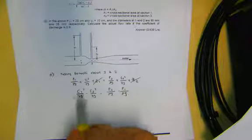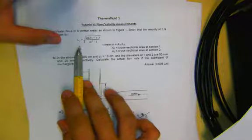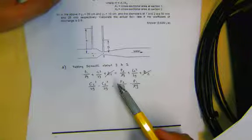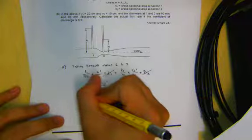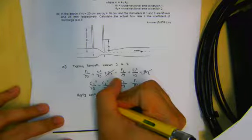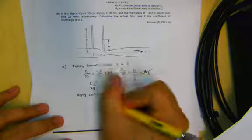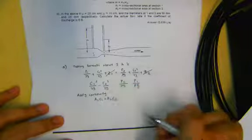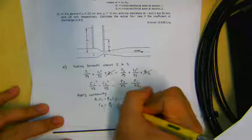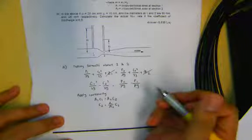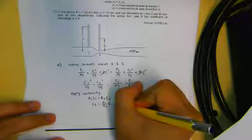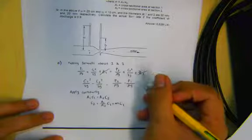We have C1 and C2 on the left, however if you look at the expression, they only need C1, so we need to replace C2. We apply continuity between 1 and 2: Q1 equals Q2, which is A1 C1 equals A2 C2. So we can express C2 in terms of C1 as A1 over A2 times C1. Since M is defined as the ratio of A1 to A2, we can replace this with M times C1.